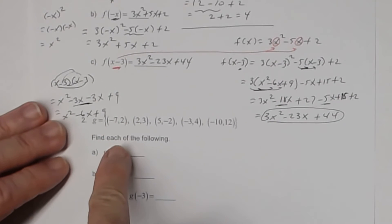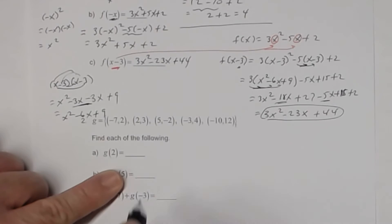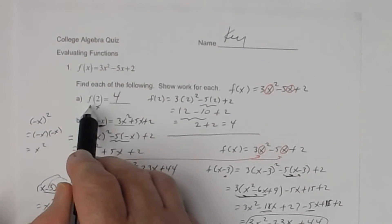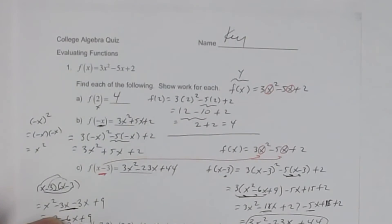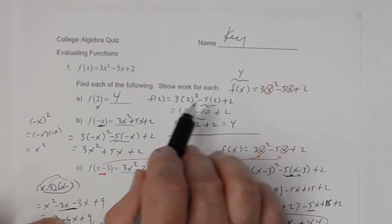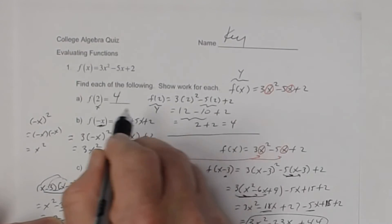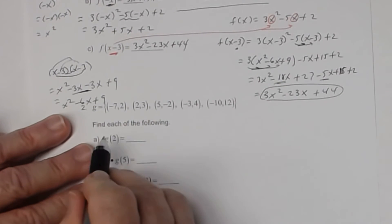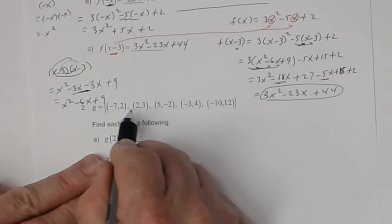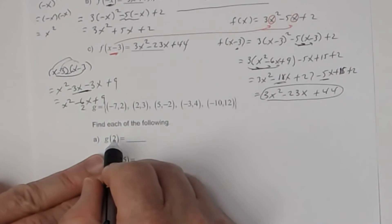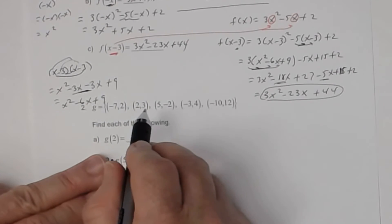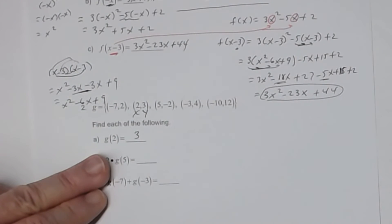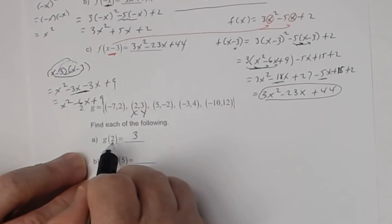This problem is fairly easy. When you look at g of 2, remember g of 2 means what is the y-value when x is 2? You've got to find the point where x is 2. When x is 2, my y-value is 3. So you put 3 as the answer — g of 2 is equal to 3.